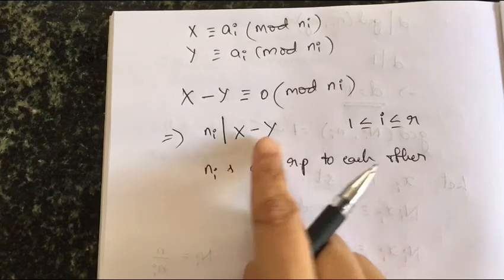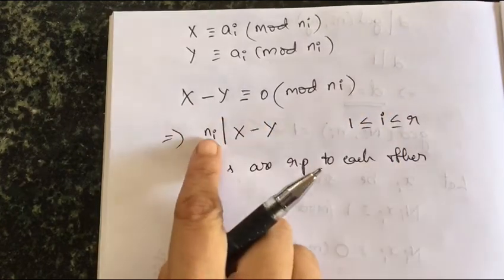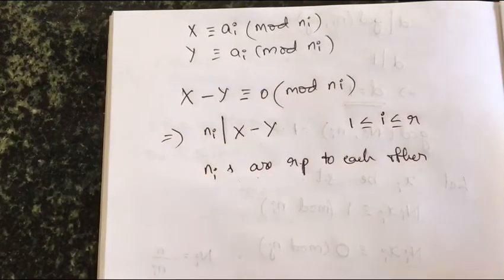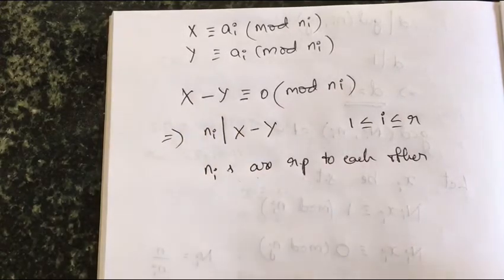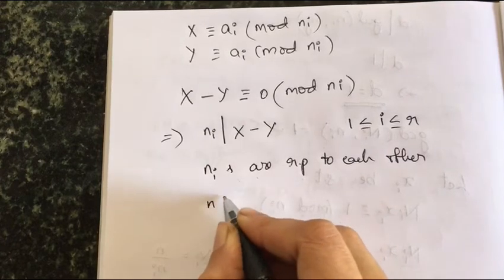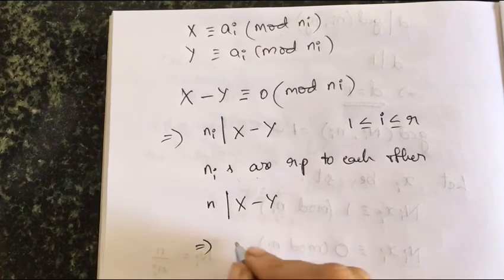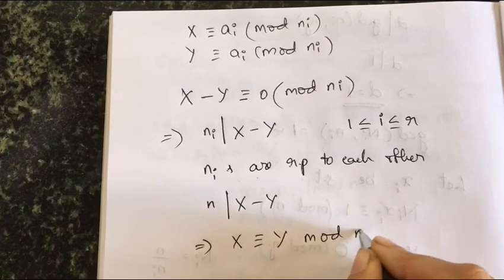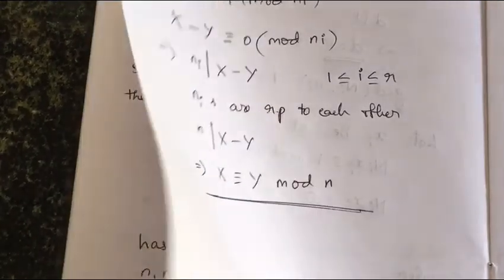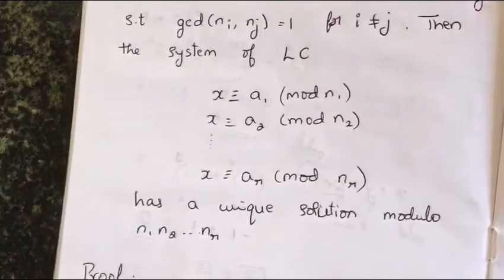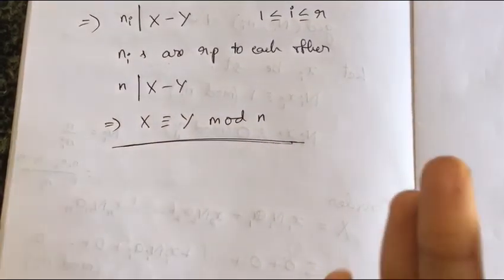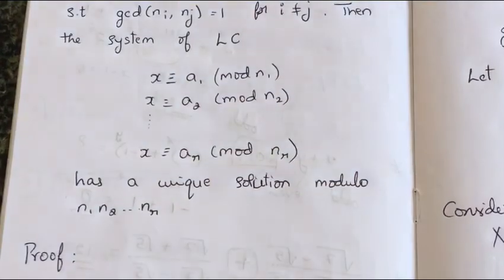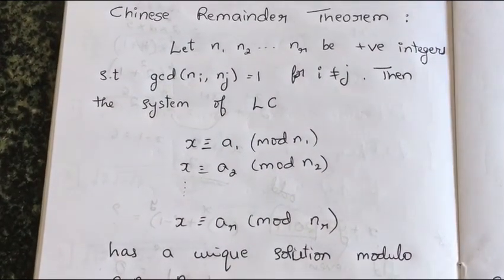Since n_i divides x − y for all i, and all n_i's are relatively prime to each other, I can say that n divides x − y. This means x ≡ y mod n — the two solutions are equal. Therefore the system of linear congruences has a solution and that solution is unique. In my other videos I have already solved problems on the Chinese Remainder Theorem — you can go through those. Thank you.